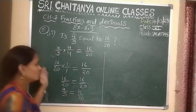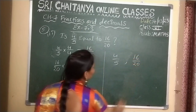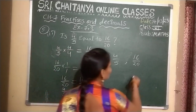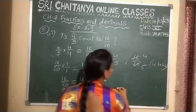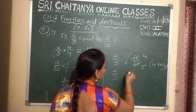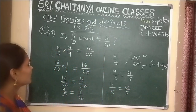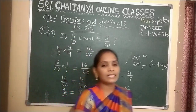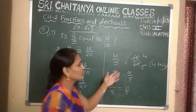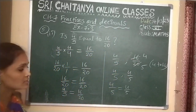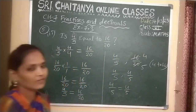One more easy method — without doing all that, we can say directly. Here we have 4 by 5 and 16 by 20. Just check if there is any cancellation. With the 4 times table: 4 fours are 16, 4 fives are 20. Do the cancellation with 4. The first fraction gives 4 by 5 and the second fraction also gives 4 by 5. So 4 by 5 is equal to 4 by 5, meaning 4 by 5 is equal to 16 by 20. This is a very easy way to do it.